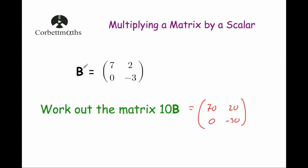So if matrix B is [7, 2; 0, -3], then the matrix 10B — when we multiply it by the scalar 10 — gives us the matrix [70, 20; 0, -30].